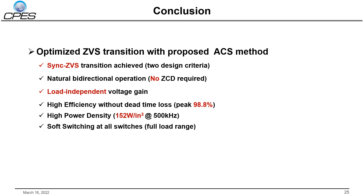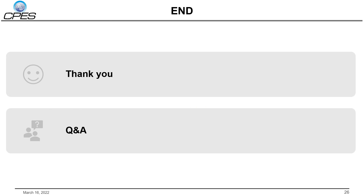In conclusion, the optimized sync ZVS transition is achieved with two design criteria: one ensures ZVS starts at the same time, and another ensures ZVS ends simultaneously. With the sync ZVS transition, many merits are achieved, such as natural bidirectional operation without ZCD circuit and load-independent voltage gain. The peak efficiency without dead time loss is 98.8% and power density is 152 W per cubic inch. ZVS on all switches has been achieved across the full load range. Thank you for attending, and welcome any questions and comments.